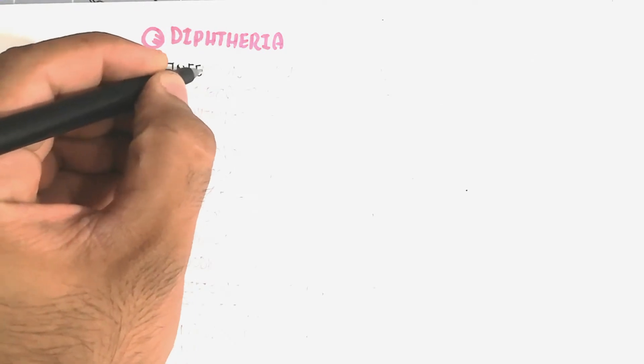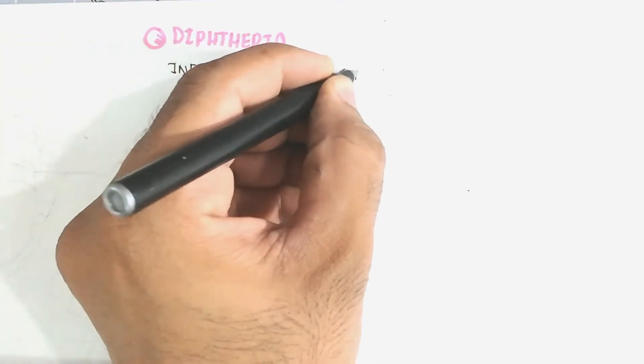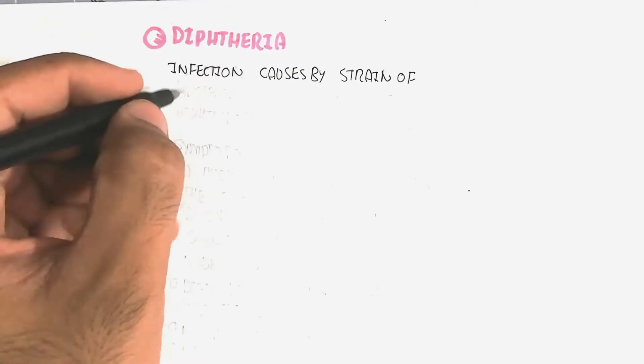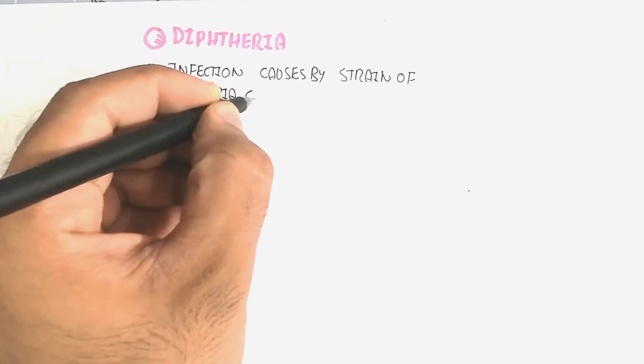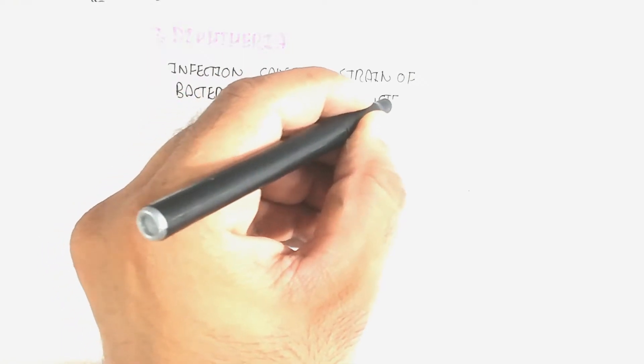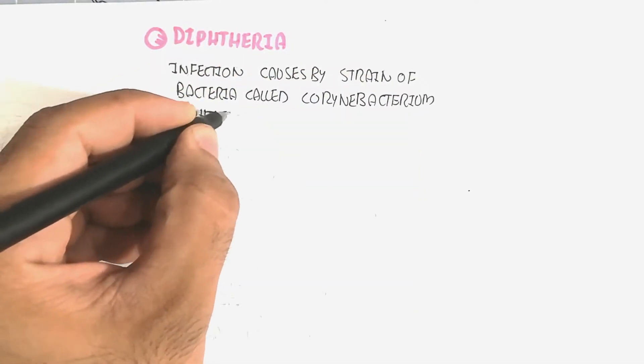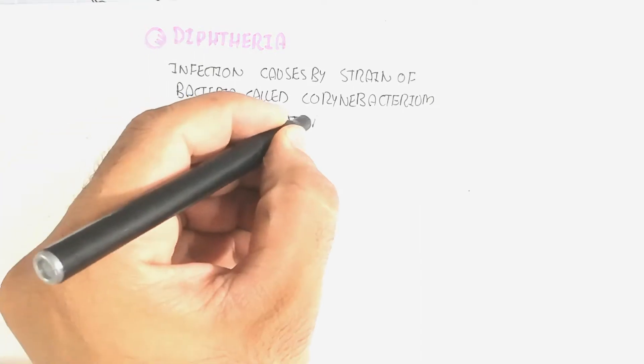Hello, in this video we will discuss diphtheria. Diphtheria is an infection caused by a strain of bacteria called Corynebacterium diphtheriae that makes a toxin, basically known as the diphtheria toxin. This toxin targets tissue for infection, which leads to increased inflammation and recruitment of immune cells.